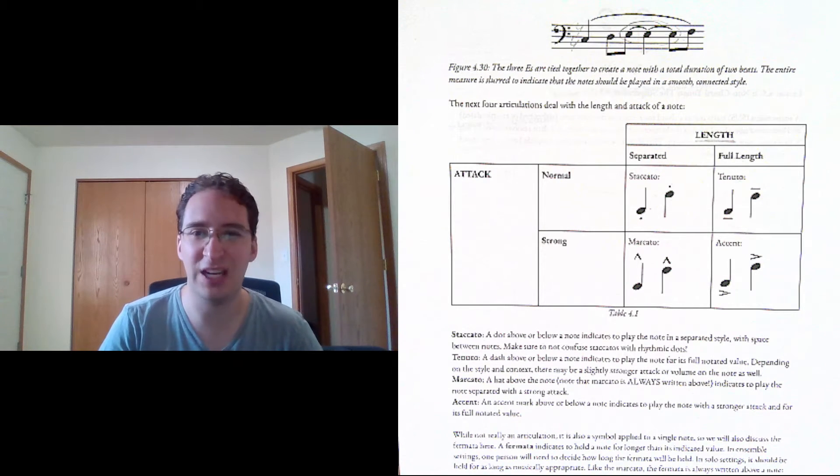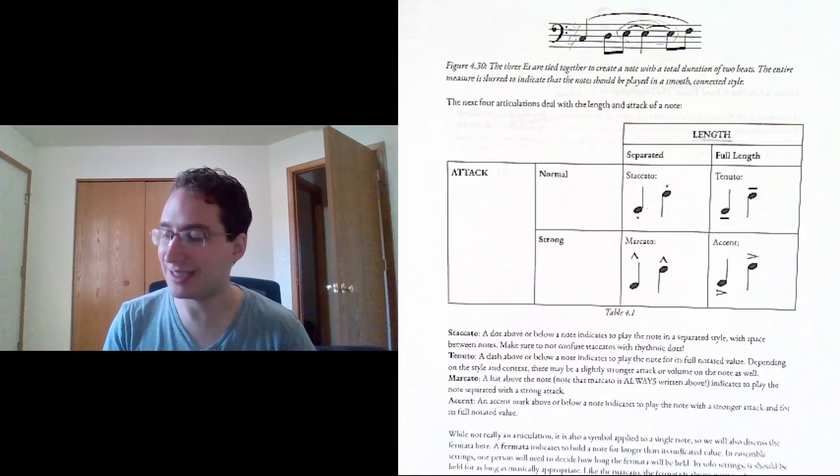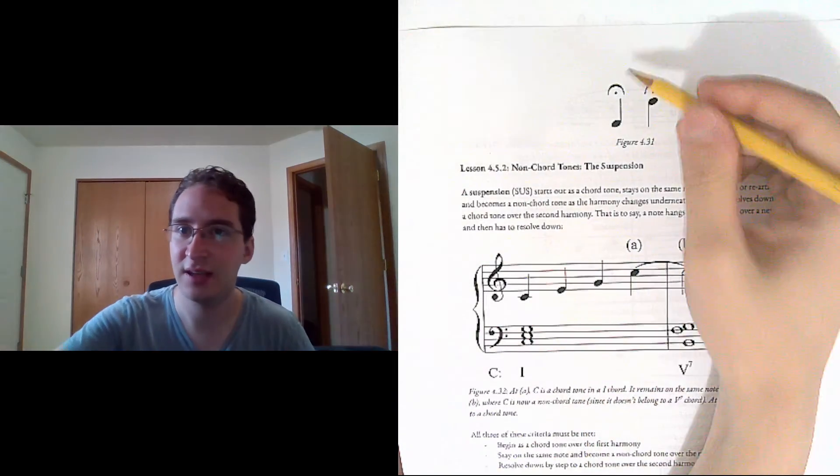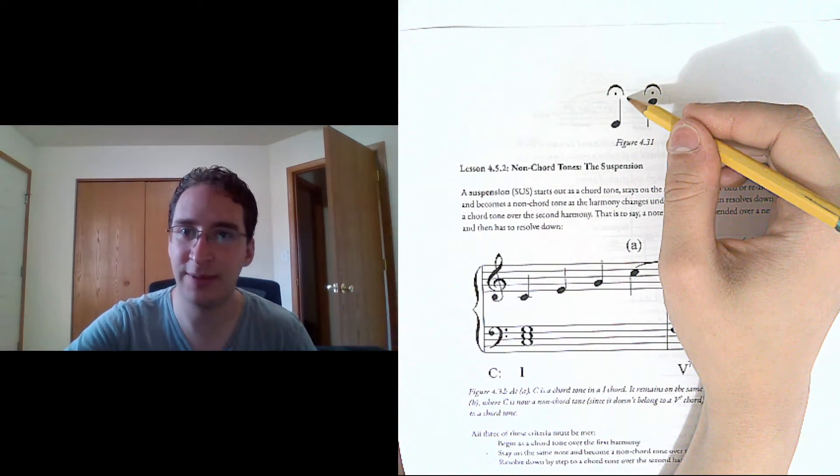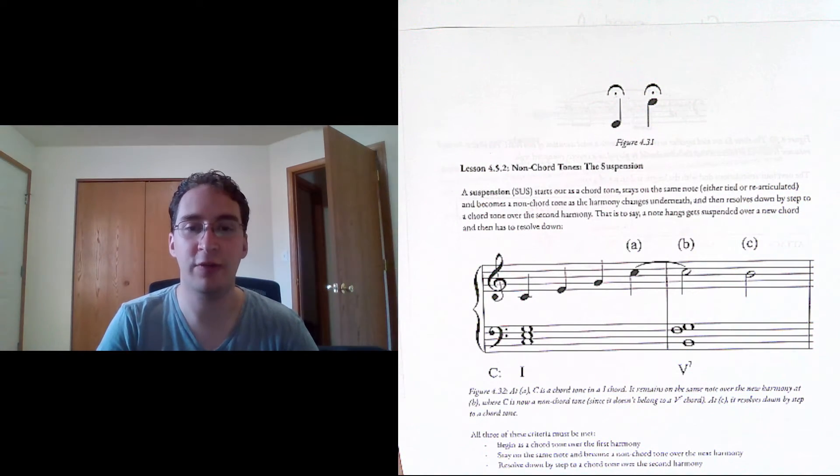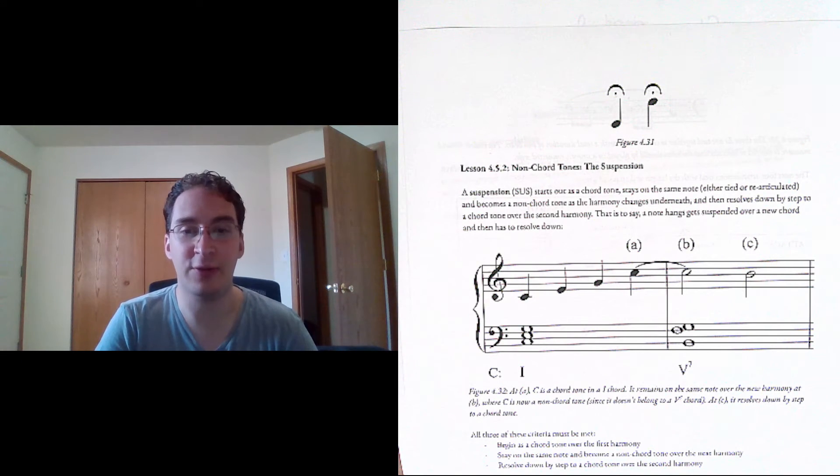And the last symbol that we're going to look at isn't really an articulation but it's a symbol applied to a single note so we're going to look at it here. It is called a fermata and it looks like this, like a semicircle with a dot in the middle. And what this means is to hold a note for longer than its written value. If you're playing by yourself you can decide how long you want it to be.